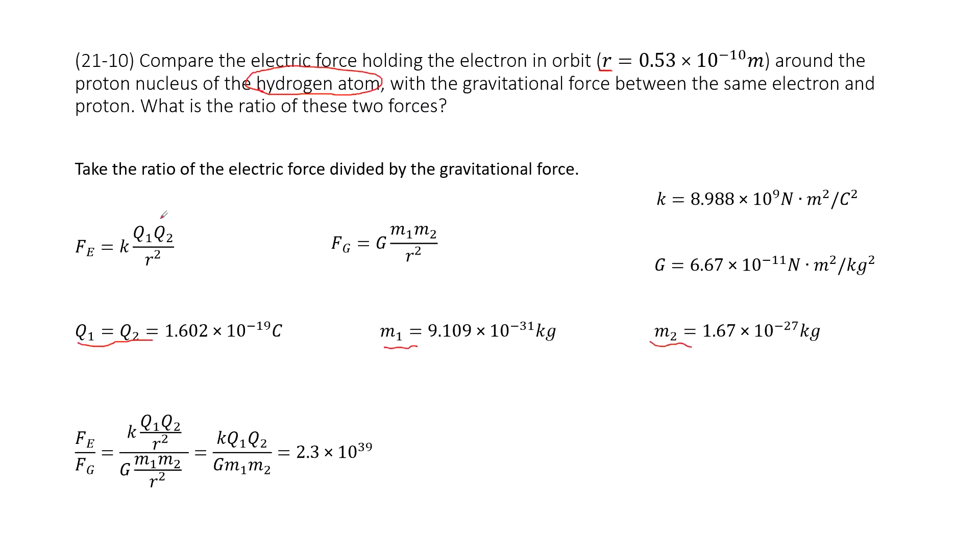Now we can write the electric force as Fe and the gravitational force as Fg. We can take the ratio Fe over Fg. We input Fe and Fg into the equation.